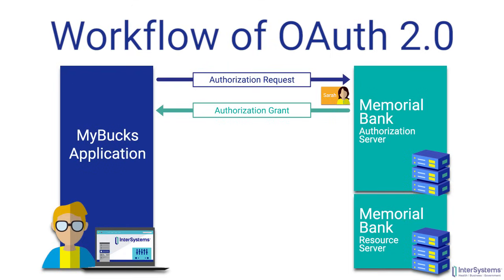That authorization is sent back to MyBucks by Memorial Bank, along with an authorization code that MyBucks will use when requesting an access token to see Sarah's account. Now is where, technically, we come to the distinction in the API, or Memorial Bank, between the authorization server and the resource server.